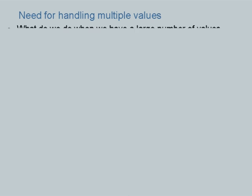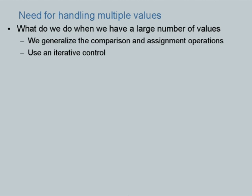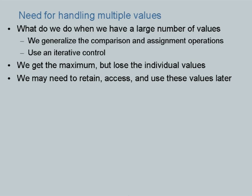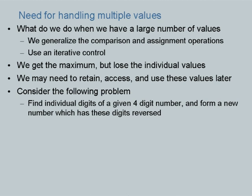But imagine that is not so — imagine you require these values. The important lesson from that exercise is that while we get the maximum, we lose the individual values. If I want to find only the maximum I do not need to retain the individual values, but what if I need them? What if I need to access these values later? Here is a problem: find individual digits of a given 4-digit number and form a new number which has these digits reversed.